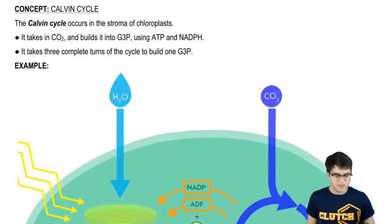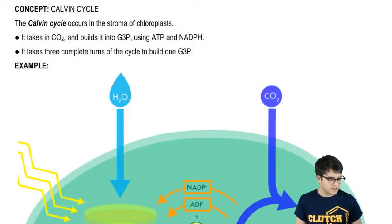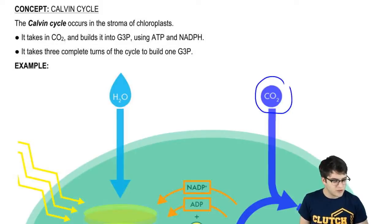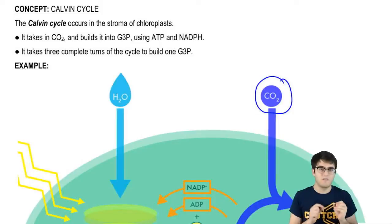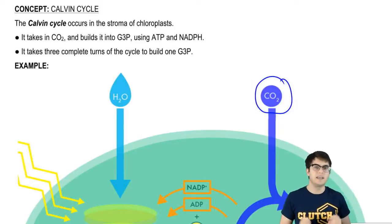Now, all of these sugars are being built from CO2. So literally, almost all the solid material you see plants made of initially comes from gas. Pretty crazy, right?